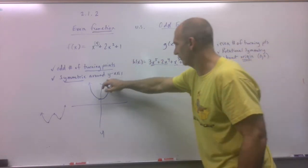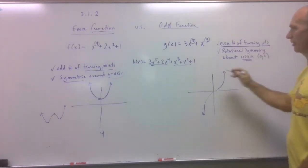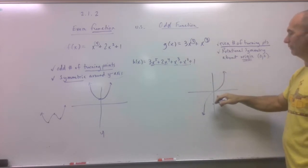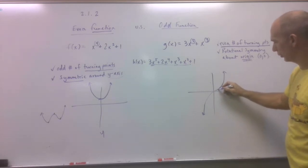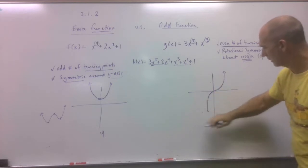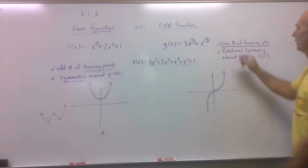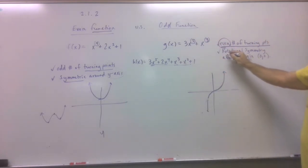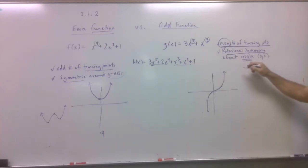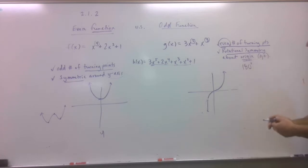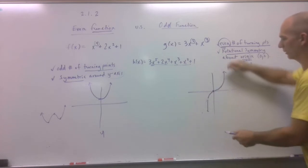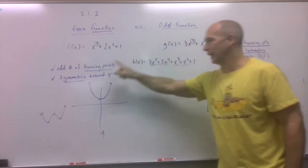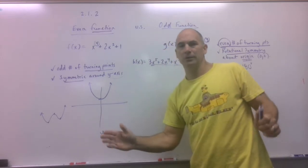Compared to even functions, odd functions have an even number of turning points. For example, graphing one looks something like a cubic, but it comes down, turns, and turns again, giving you one, two turning points - an even number. For an odd function, if you rotate it 180 degrees around the origin - like spinning it with a nail right at zero, zero - you end up with the exact same graph. That's rotational symmetry, which is different from being symmetric around the y-axis.